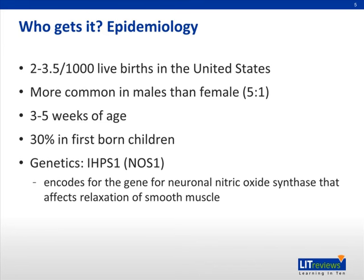Several genetic loci that predispose patients to pyloric stenosis have been identified. For example, the infant hypertrophic pyloric stenosis 1 gene, or NOS1, encodes for a gene that affects the neuronal nitric oxide synthase, which affects relaxation of smooth muscle and may contribute to the progression toward pyloric stenosis. In addition, abnormalities in peptide-containing nerve fibers may also play a role.